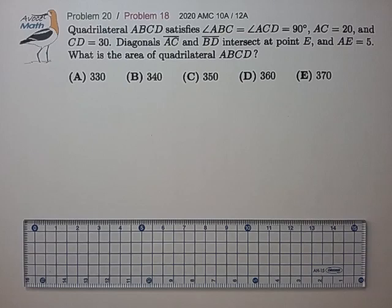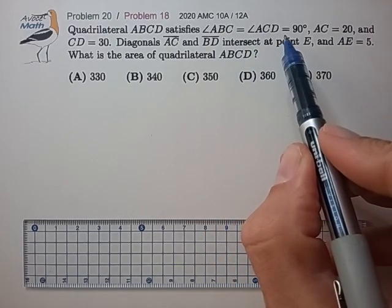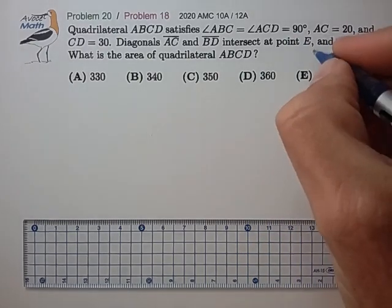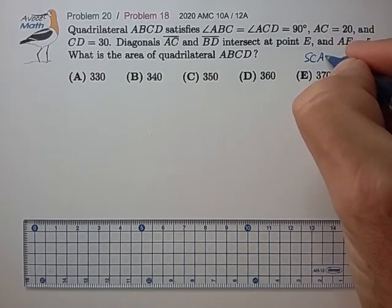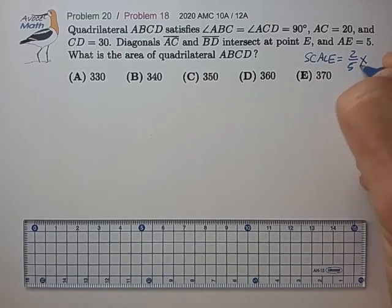So it looks like we know the dimensions of triangle ACD. Let's draw that first and choose a convenient scale of 2 fifths to fit on this paper.